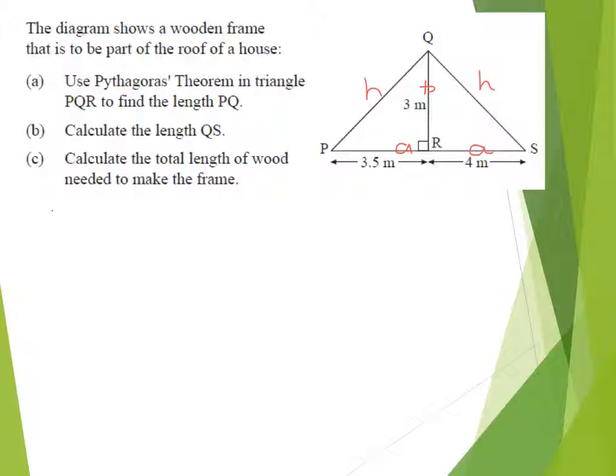Part A asks us to find that length PQ. So we're just going to use the triangle PQR this time. We'll totally ignore the other side. So 3 squared plus 3.5 squared equals, and let's call that X just to be straightforward, so that's equal to X squared.